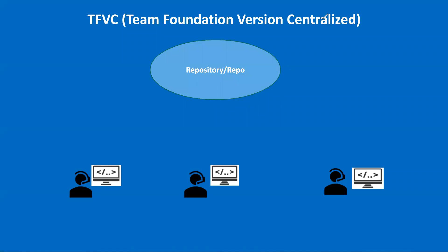The meaning of 'centralized' is that whenever a developer wants to make some change and commit it to the repository, the first step is to establish a connection between his local system and the repository. Then, for whatever file he wants to modify, he makes those changes, and the moment he commits that change it is reflected directly to the repository.